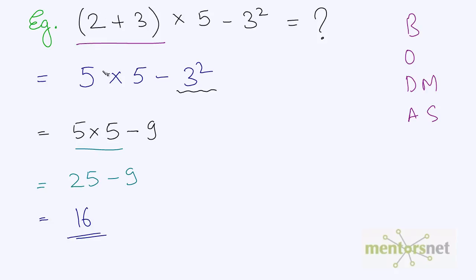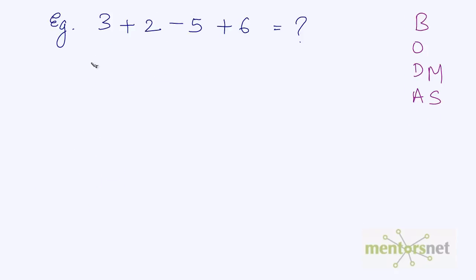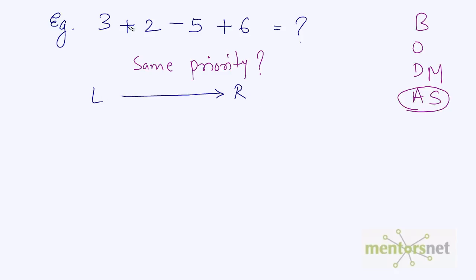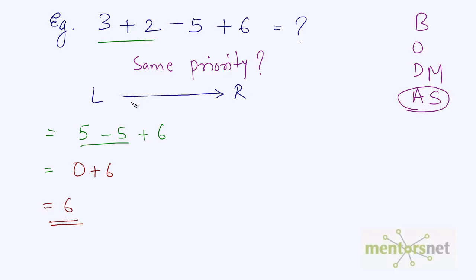This is how you simplify any expression. Keep in mind, while you simplify an expression you have to use Bodmer's rule, otherwise you will get a wrong answer. Let us solve another expression. In this expression you have operators with the same priority — addition and subtraction — so you go from left to right. We solve 3 plus 2 first, which is 5, then 5 minus 5 is 0, plus 6, which gives us 6.